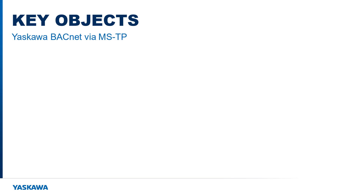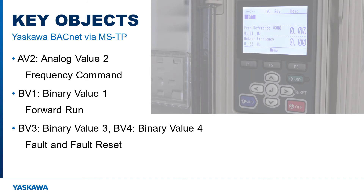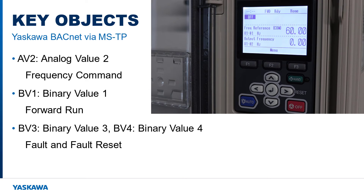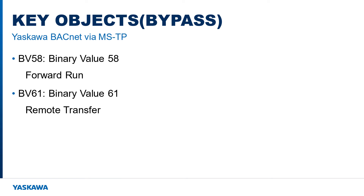Some examples in the standard objects for the drive include AV2 (analog value 2), the frequency command which sets a speed reference to the drive via the BACnet network. BV1 (binary value 1) gives the forward run command to the drive. BV3 and BV4 set the external fault and fault reset. Some bypass examples include BV58 and BV61, which give the bypass a forward run command and a trigger to transfer the drive to bypass, respectively.